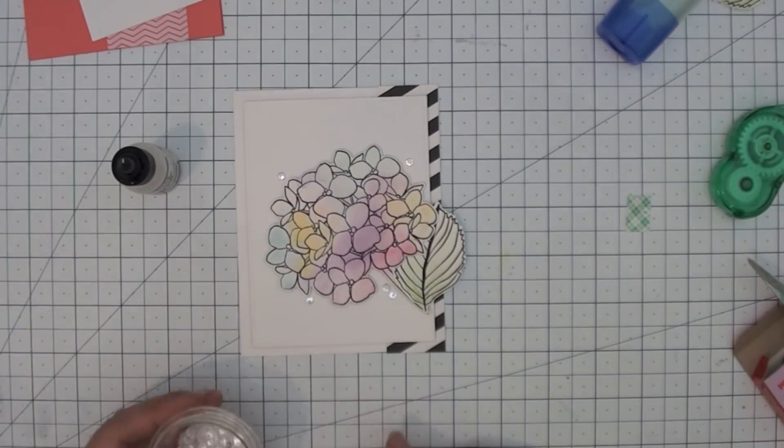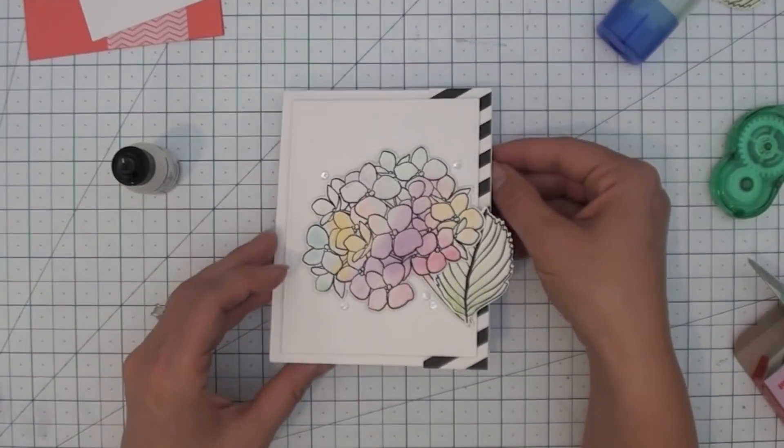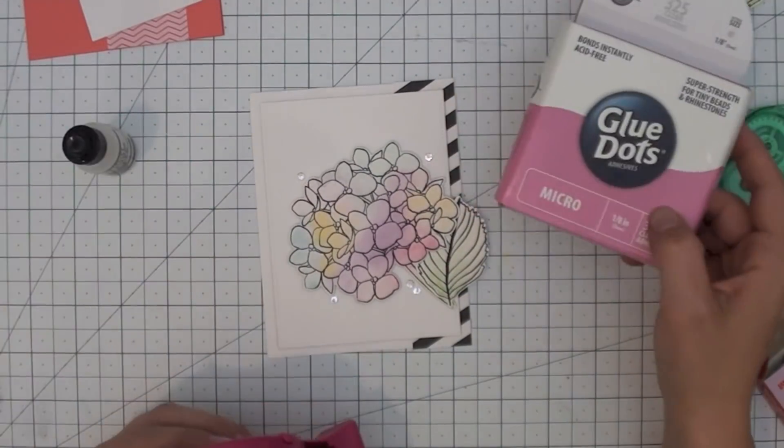Here you can see I've added some sequins that are the Sparkling Clear by Pretty Pink Posh. When I use this, I just put little dots on my card and then bring the sequins to them.